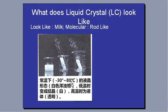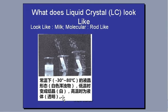Liquid crystal material is between liquid and crystal. When it gets cold, it will become another kind of liquid crystal that is more closer to the crystal. And when it is heated up, it becomes liquid — it becomes transparent.